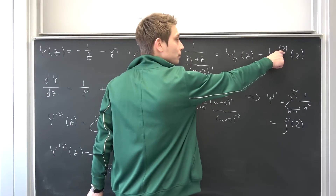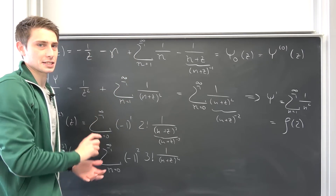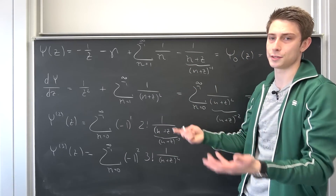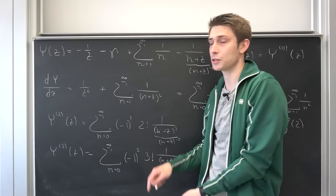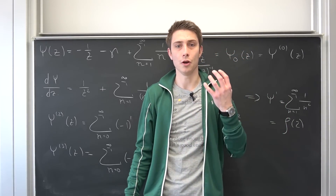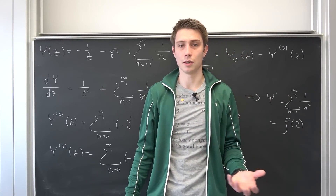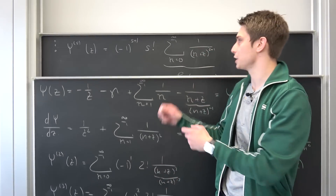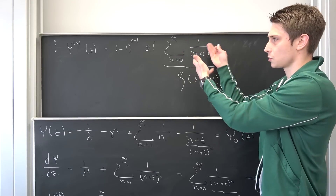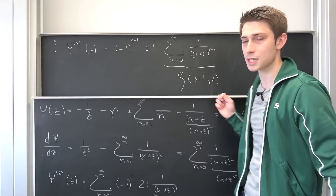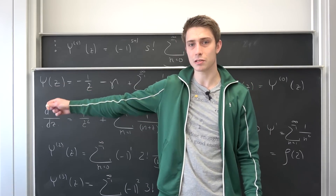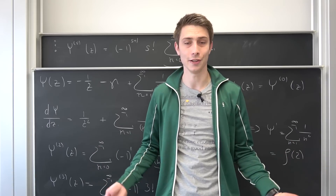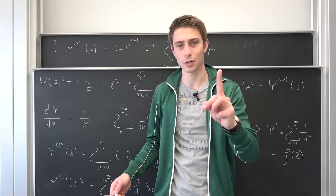On the zeroth term — the digamma function itself — this relation to the Hurwitz zeta doesn't quite hold. But we have calculated the sth derivative, meaning whenever we know all the derivatives of a function and the function is infinitely often differentiable — which it is, since it's essentially a rational function — we can expand it into a Taylor series. The gamma function is thus obviously analytic, and that's what we are going to do next.